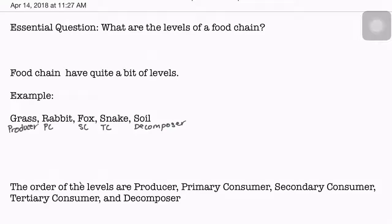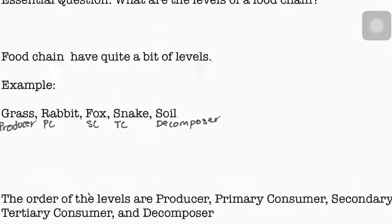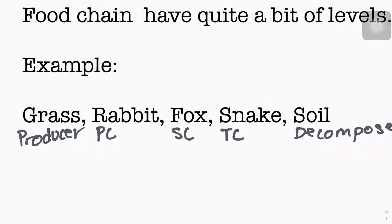The rabbit eats the grass, so the grass gives its energy to the rabbit, which is the primary consumer. The primary consumer is what eats the producer.